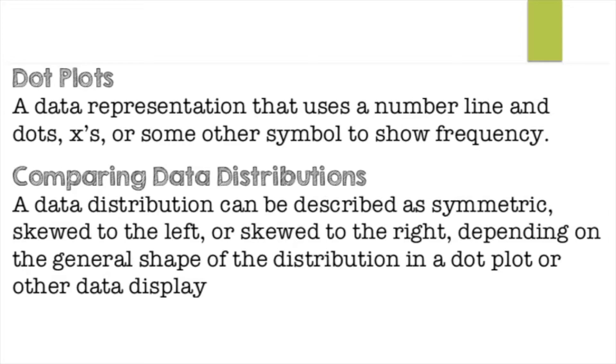And when you're comparing data distributions, a data distribution can be described as symmetric or skewed to the left or skewed to the right, depending on the general shape of the distribution in the dot plot or other displays. So it could be equally distributed, you know, directly in the center. You'll see once you put in all the data values in a dot plot where the data lies.